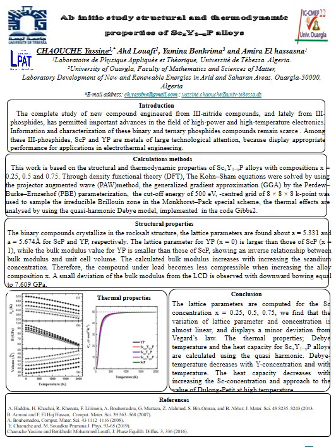In the computation methods, this work is based on the structural and thermodynamic properties of the alloys studied with composition X equal to 0.25 and 0.75, through density functional theory (DFT). The Kohn-Sham equations were solved using the projected augmented wave (PAW) method. The generalized gradient approximation (GGA) by Perdew, Burke, and Ernzerhof (PBE) was used. The cutoff energy of 500 electron volts and a centered grid of 8×8×8 k-points was used to sample the irreducible Brillouin zone.